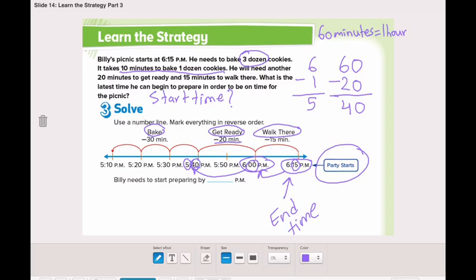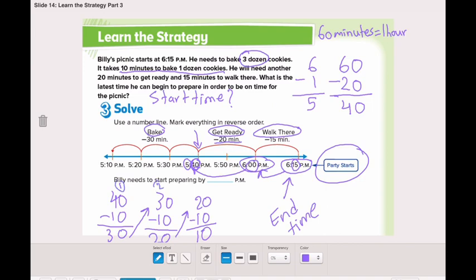Here we have what we've reached, 40 minutes. So, 40 minus 10 is 30. 30 minus 10 is 20. 20 minus 10 is 10. We subtracted 10 three times because he needs to bake 3 dozens. And each dozen takes 10 minutes to bake.